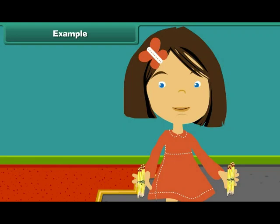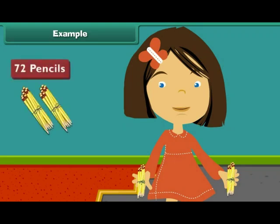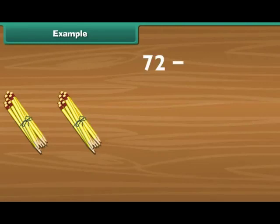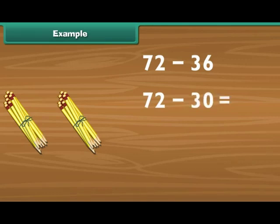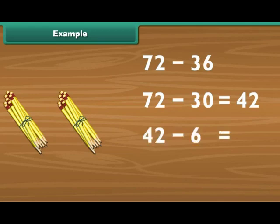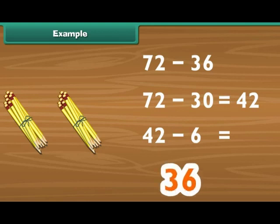Example: Rina's father bought her 72 pencils. She used up 36. How many are left? To find how many pencils are left, we must subtract 36 from 72. First subtract 30 from 72. The answer is 42. Now subtract 6 from 42 using reverse counting: 41, 40, 39, 38, 37, 36. Therefore, 36 is the answer.